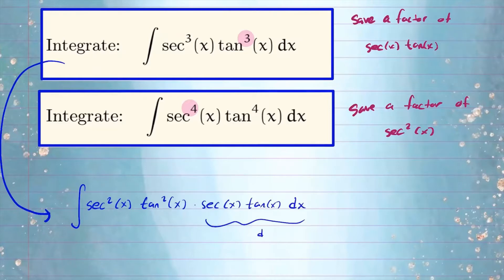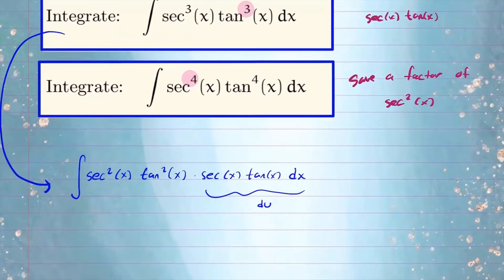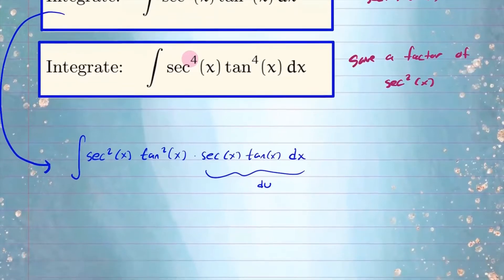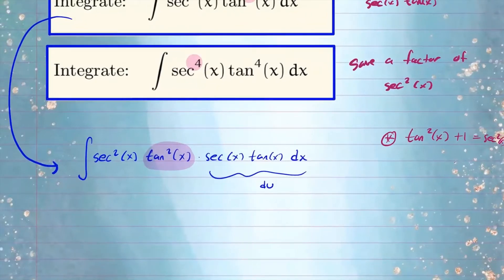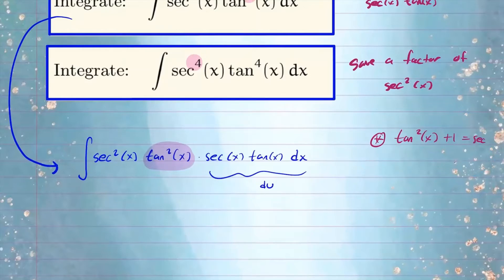We're going to save the secant x tangent x for the du portion, because we're going to choose u to be secant. That means we want to rewrite the entire integral in terms of secant. We need to change the tangent squared term. The identity that's going to be useful here is: tangent squared of x plus one equals secant squared of x. That's the identity we're going to use for this problem.